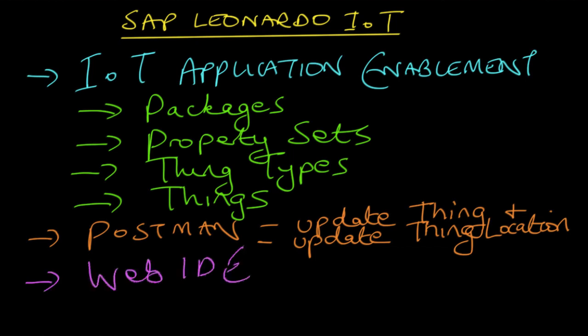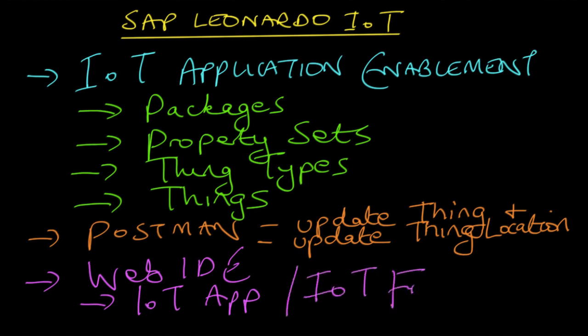After that, we're going to use the Web IDE with two templates to build applications. The first is our IoT Application template, which enables you to build an application in a wizard-like manner — you choose the front page, the subsections, and click through the wizard. The other option is the IoT Freestyle template, which lets you choose where on the analytic page you want your various objects to be placed.